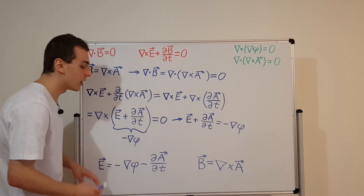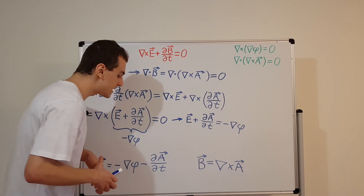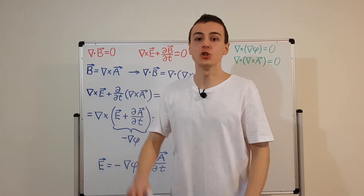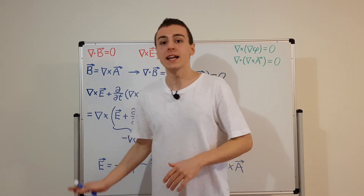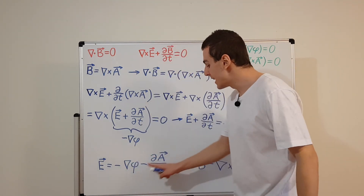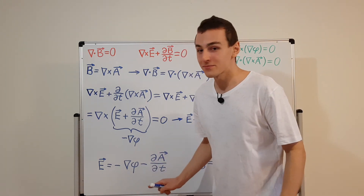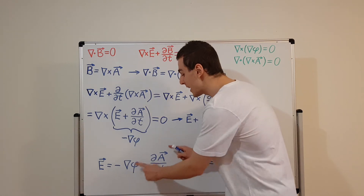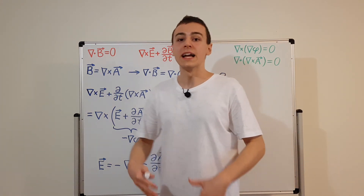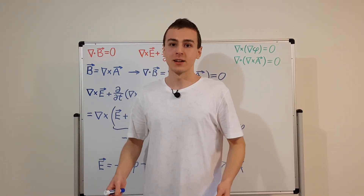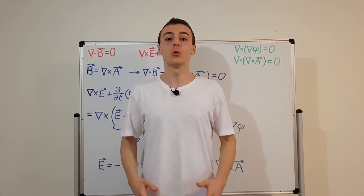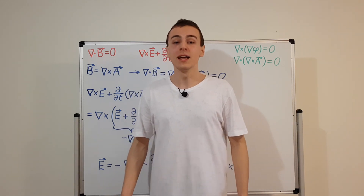Another important point is that φ and A are not uniquely determined — multiple different versions of φ and A can give the same electric and magnetic fields. This introduces the topic of gauge transformations and gauge invariance, which will be covered in the next video in the electromagnetism playlist.